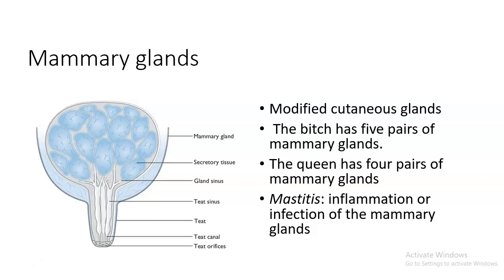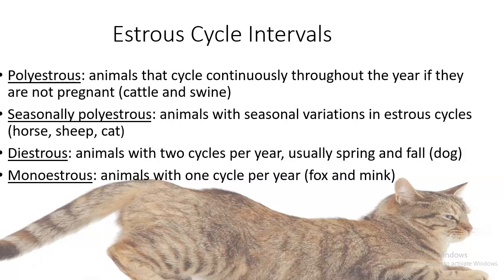Estrus cycle intervals vary by species. Polyestrous animals cycle continuously throughout the year if not pregnant — examples are cattle and swine. Seasonally polyestrous animals have seasonal variations in estrus cycles — examples are horses, sheep, and cats. Diestrous animals have two cycles per year (usually spring and fall) — the example is dogs. Monoestrous animals have roughly one cycle per year — examples are foxes and mink.